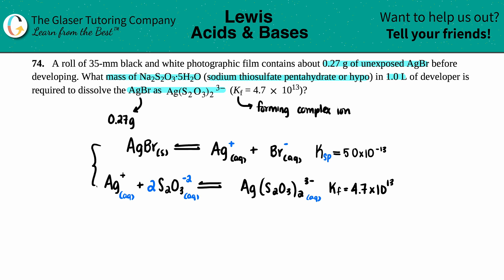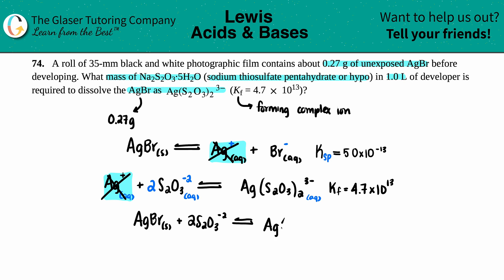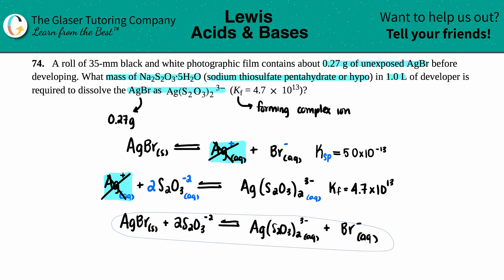Now I'll bring the two equations together. If you have the same thing on opposite sides, they cancel. Ag⁺ appears on both sides, so it cancels. Rewriting what remains: AgBr solid plus 2 S₂O₃²⁻ aqueous comes to equilibrium to form Ag(S₂O₃)₂³⁻ aqueous plus Br⁻ aqueous.